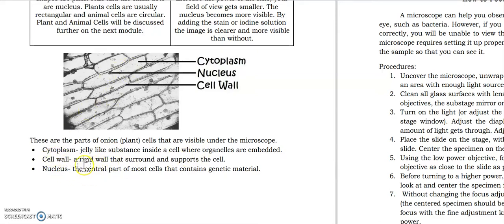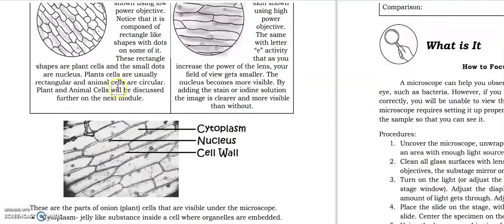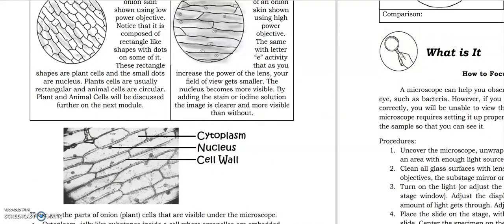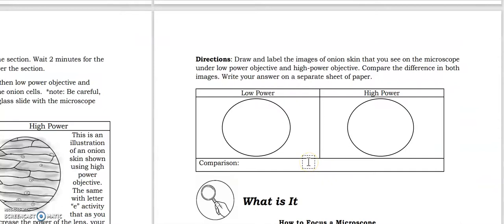And the nucleus is the central part of most cells that contains genetic material. So it's the circle, and it's solid black. And you may draw the image of onion skin here.